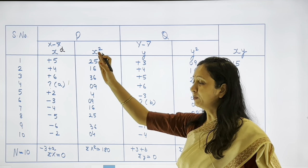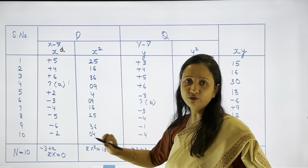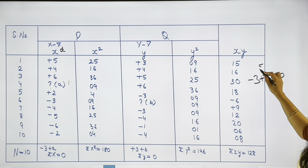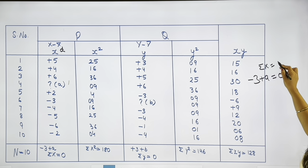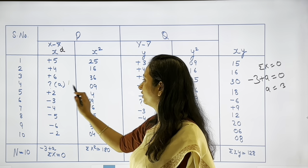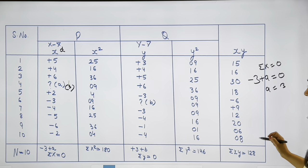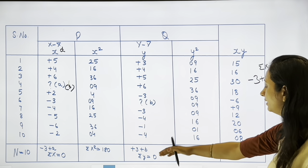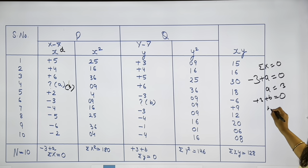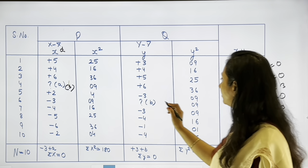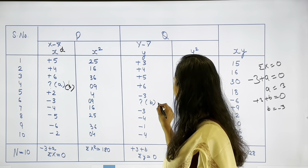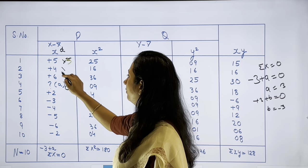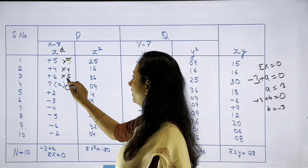Similarly from Q series: 3 + B = 0, so B = −3. Now A = 3 and B = −3 are placed in the table. Next, we calculate X², Y², and XY for each pair, paying careful attention to signs during multiplication.